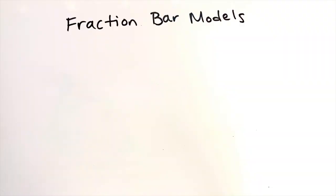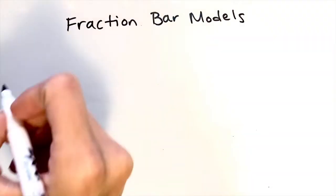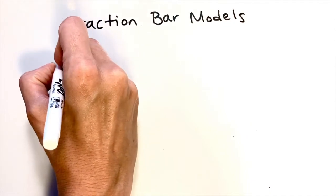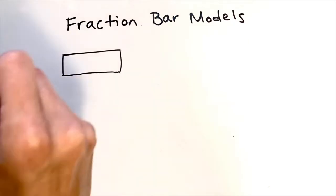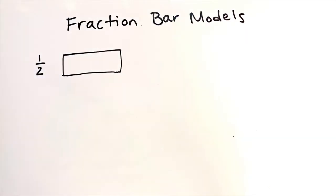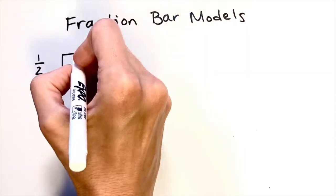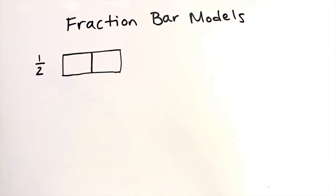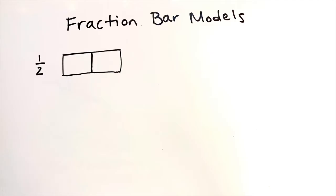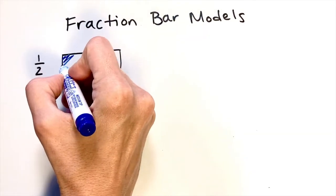Bar models are sort of like a candy bar, so you're going to want to draw a rectangle. Let's use a bar model to show one half. One half is pretty easy — our brain likes cutting things in half. To draw one half, just draw a line right down the middle of your rectangle. This is an estimation of course, but get as close to the middle as you can. Now I'll shade in one of these pieces to show the fraction one half.